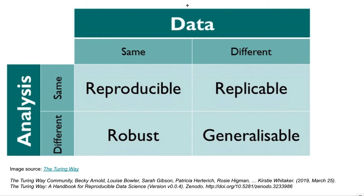The term 'robust' refers to the same data but a different analysis method. A good example in microbiome research might be applying both the unweighted UniFrac diversity metric and the Jaccard diversity metric to the same data. If you draw the same conclusion from both, that tells you the finding is robust — it's not just something you would observe with one exact analysis method, but you would still come to the same conclusion from a different view of what beta diversity means.